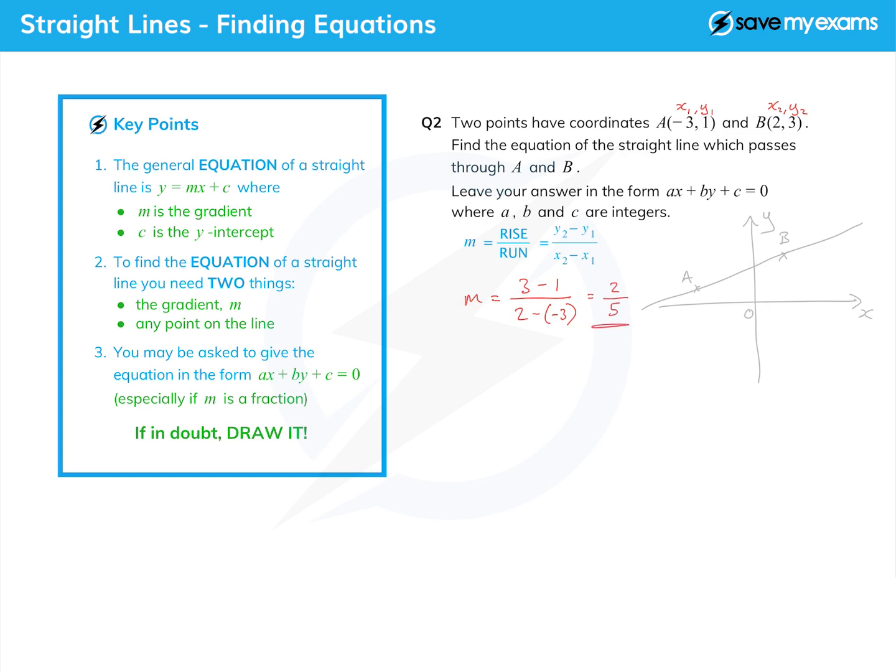Okay, so the gradient is 2/5, and now we have the gradient m and we have a point on the line. In fact, we've got two points on the line, so we can use either of those. Let's write down the equation of the line in classic y equals mx plus c form. It's y equals 2/5 x plus c, and we've got to find c.